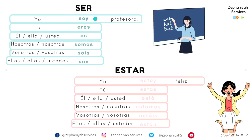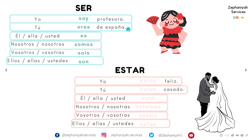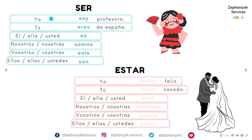Let's start. Yo soy profesora. Yo estoy feliz. Tú eres de España. Tú estás casado. You'll notice we're using yo and tú — these are personal pronouns. When you're a Spanish beginner, it's okay to use them. But as you conjugate verbs, each conjugation already belongs to the personal pronoun. So eventually you can just say 'soy profesora,' because soy already belongs to the first person — to 'I.'